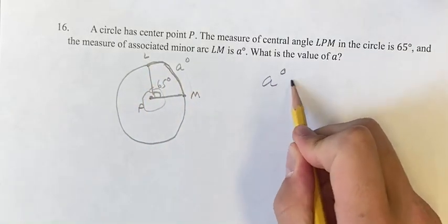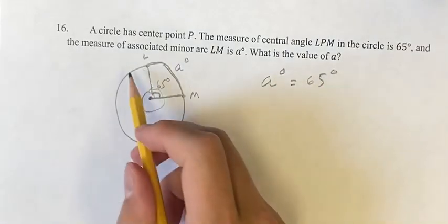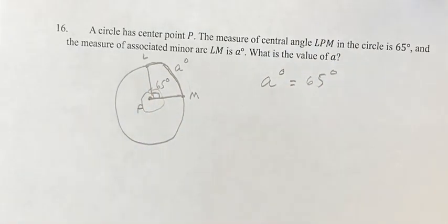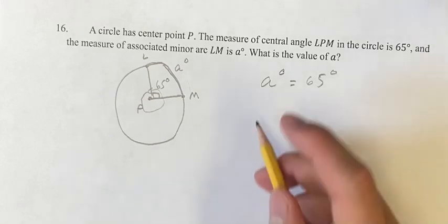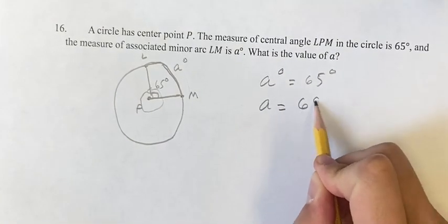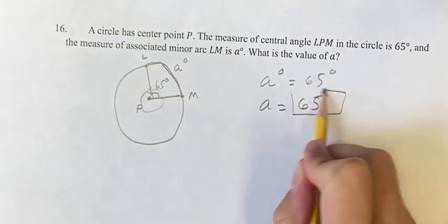So A degrees is going to be the same as 65 degrees. And then obviously the other one would be 360 minus 65, but we don't have to worry about that right now. And therefore, A is 65, which is going to be the final answer.